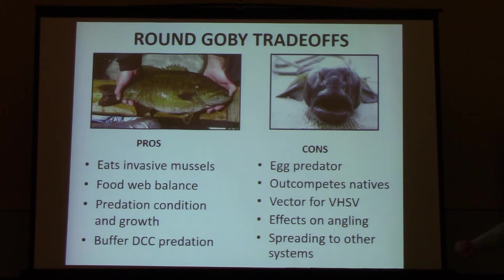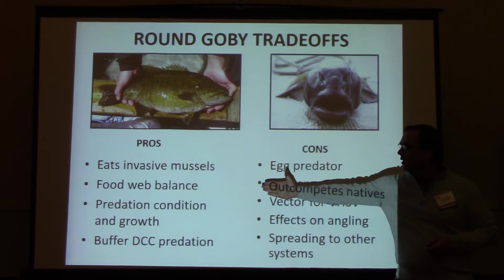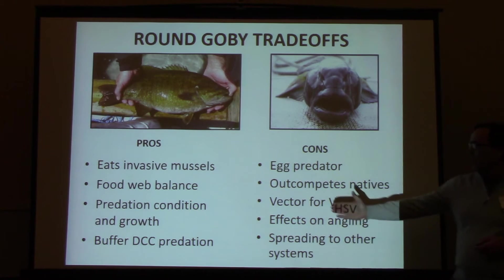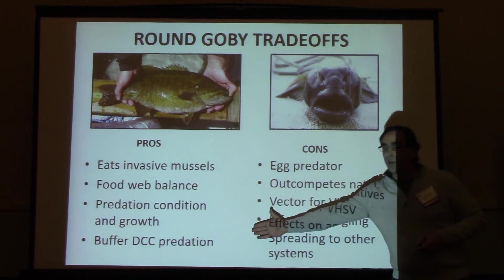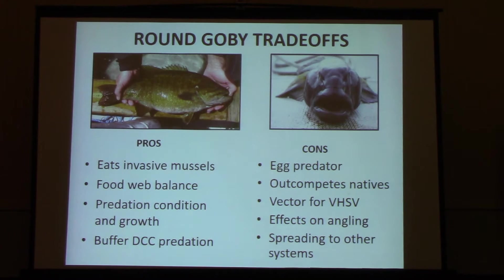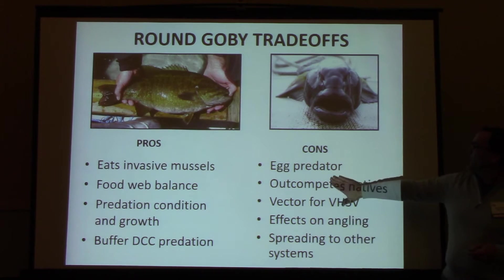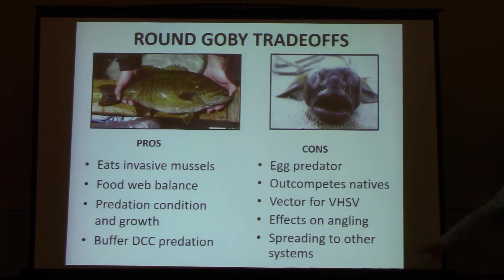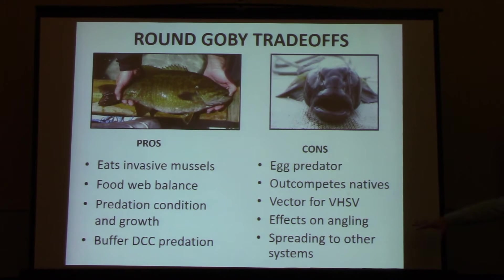Thinking about these trade-offs: we have incredibly fat bass in the system, which people see as a real pro. They're eating and converting dreissenids. They've altered the food web balance, bringing dreissenids back into the food web, and increased predation condition and growth while buffering cormorant consumption — we have a lot of cormorant colonies in the Thousand Islands region that have had impacts on fisheries. We balance that against cons: egg predation, out-competing native species, vectors for VHSV, and effects on angling. Also, the Great Lakes are spreading this species to other systems.